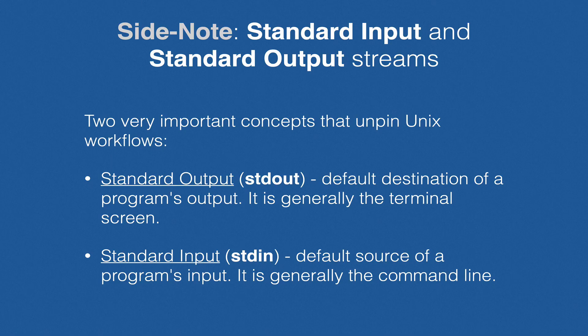To understand how to make use of this super useful feature of Unix, there are two important concepts to introduce: where the output and input for Unix programs normally comes from. This is so-called standard output and standard input. Normally, standard output comes right back at you when you enter your command. You type ls on the command line and the output — the listing of the current directory — comes right back to the terminal. Standard input normally comes from the command line itself.